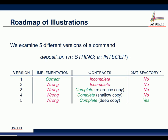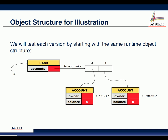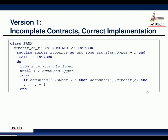Here's the bank setup we assume: a bank object with an accounts array of two elements. At position zero: an account with owner Bill, balance zero. At position one: owner Steve, balance zero. We'll use this to explore the post-condition for `deposit_on`. Version one has an incomplete contract. The require simply checks the owner exists.